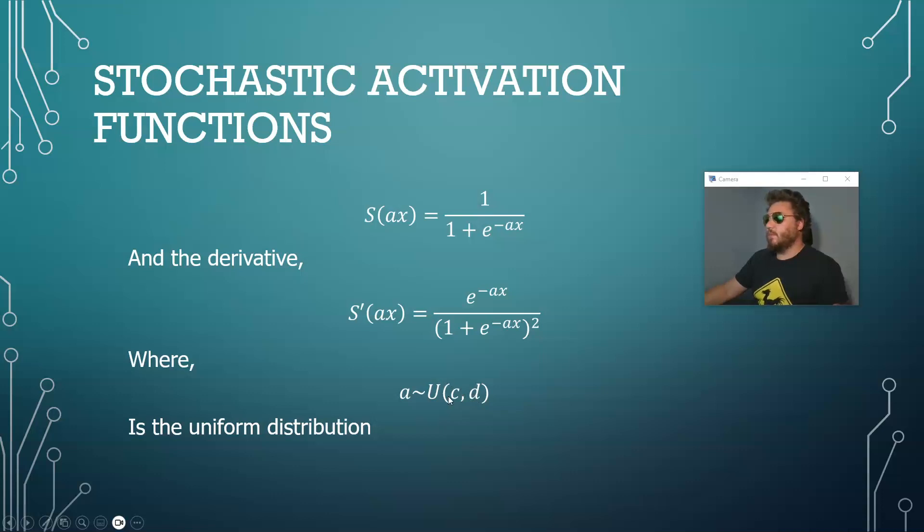So in this case what we're going to do is distribute a with respect to the uniform between c and d, namely one and two, so it's going to be a random value between one and two not including one or two.